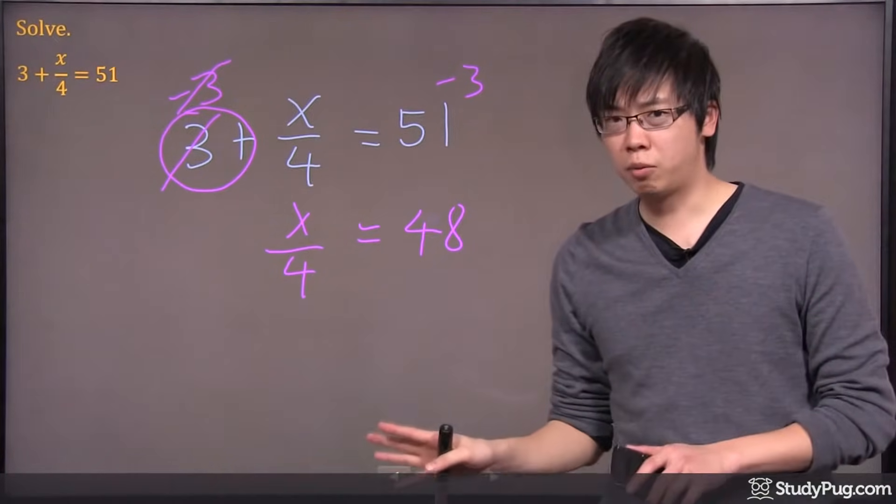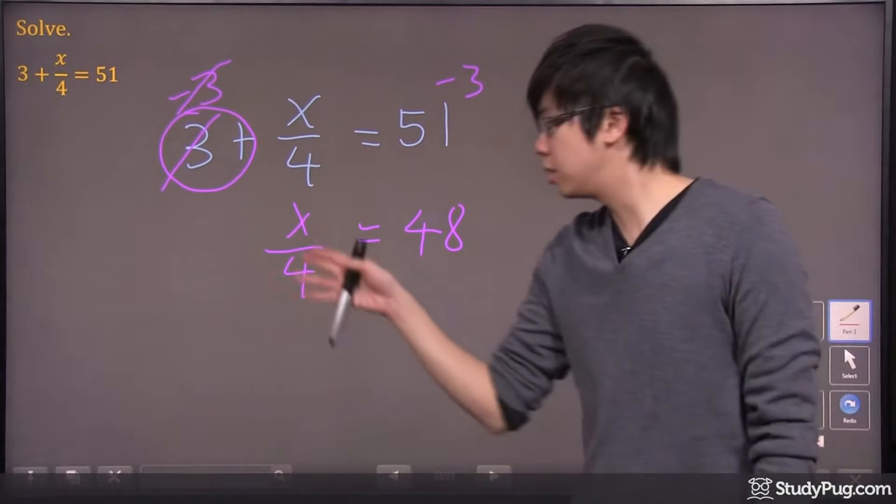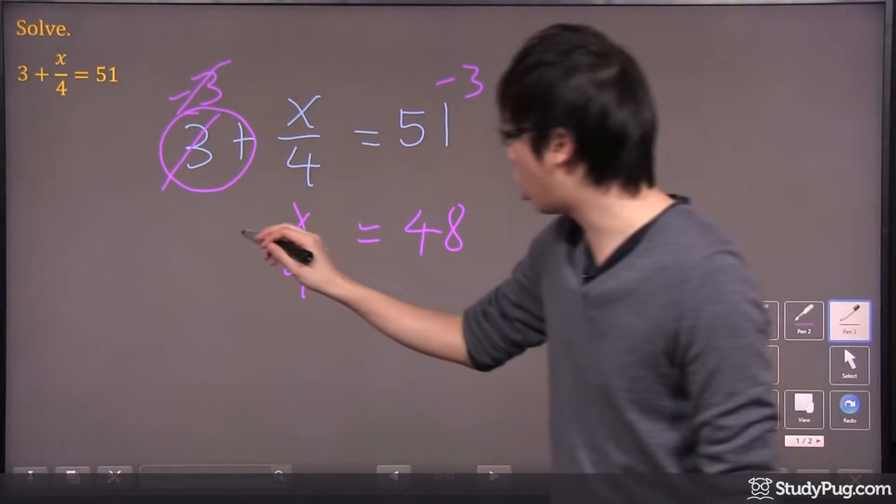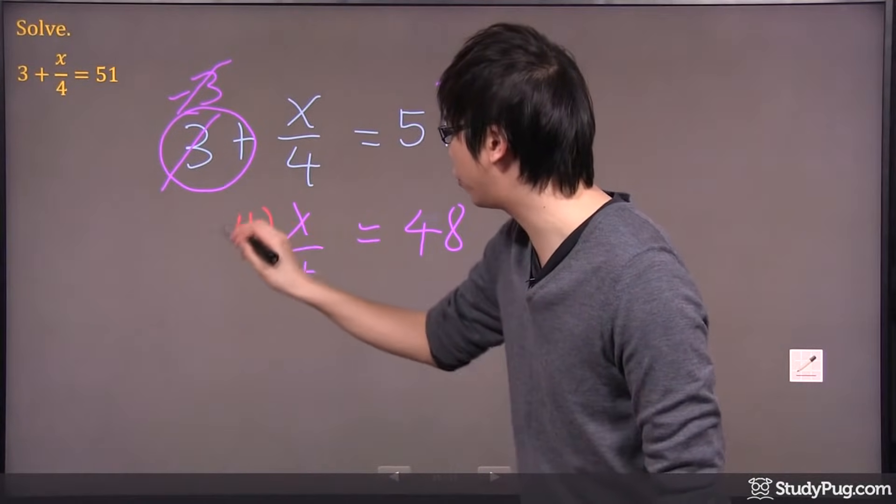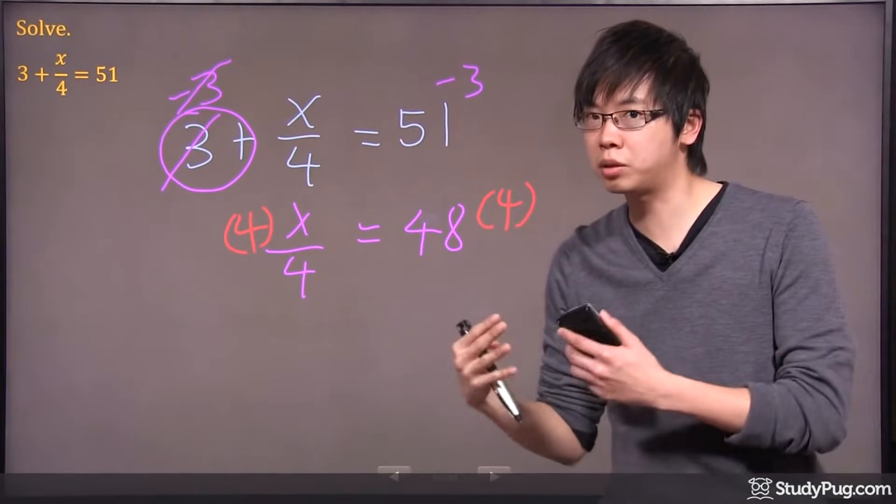So the last step here to solve for x is that we have to get rid of the 4 underneath. This has been divided, so we do the opposite by multiplying by 4. Let me just put a 4 in brackets. It means that they're being multiplied.